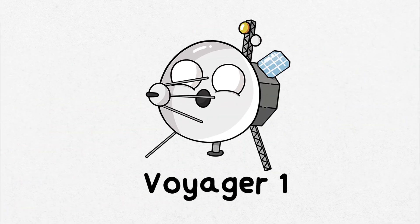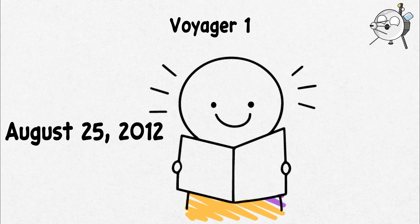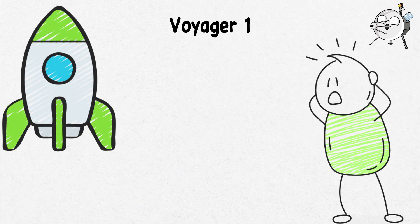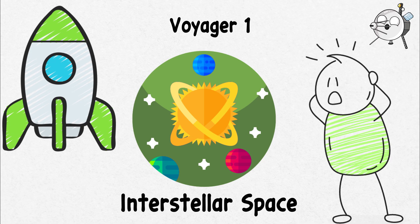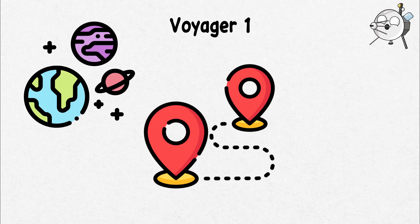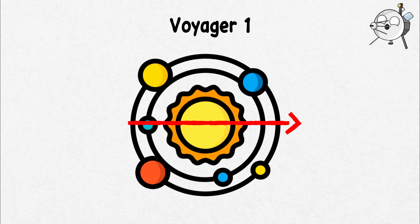Voyager 1's interstellar journey. On August 25th, 2012, Voyager 1, a spacecraft launched by NASA back in 1977, achieved something no human-made object had done before. It entered interstellar space. An experiment initially sent to explore the outer planets journeyed into the unknown, beyond our solar system.